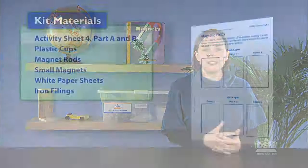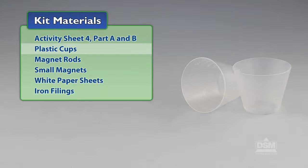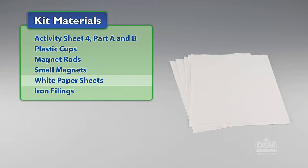You will need the following materials from the kit: Activity Sheet 4, Part A and B, Plastic Cups, Magnet Rods, Small Magnets, White Paper Sheets and Iron Filings.